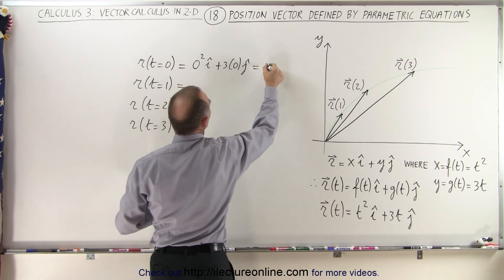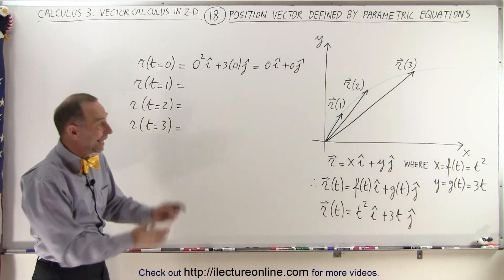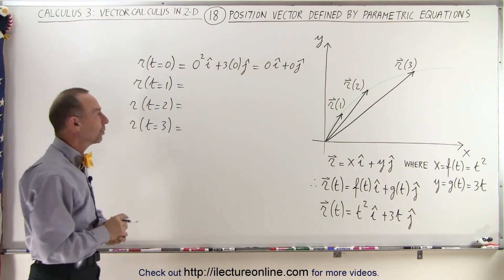So that's simply 0i plus 0j, or the 0 vector. In other words, it is at the origin at time equals 0.